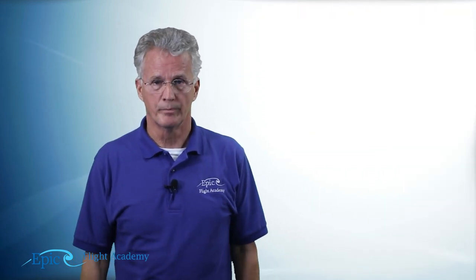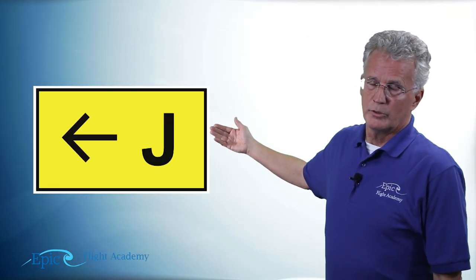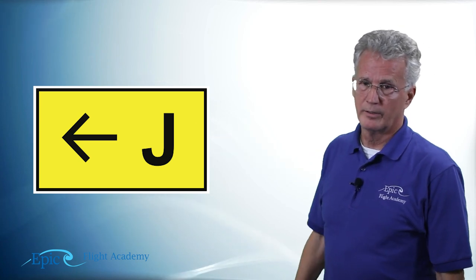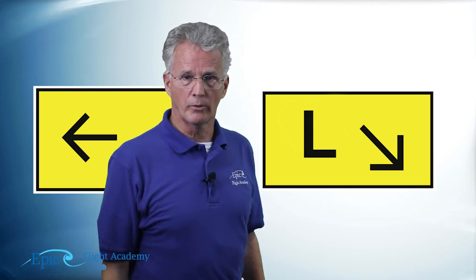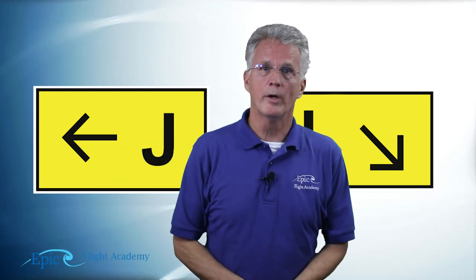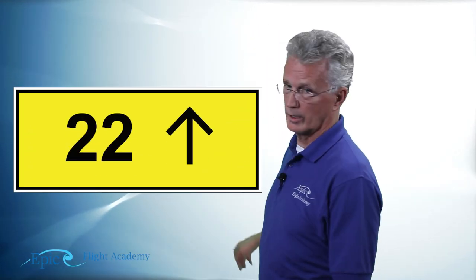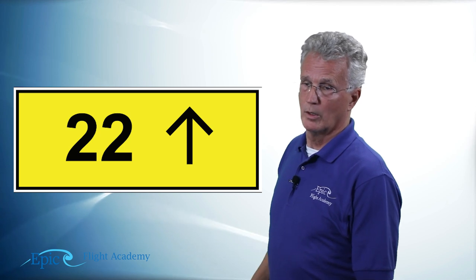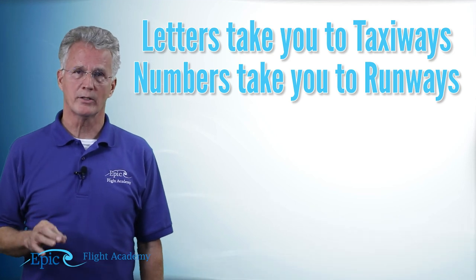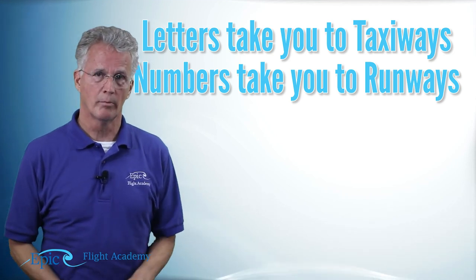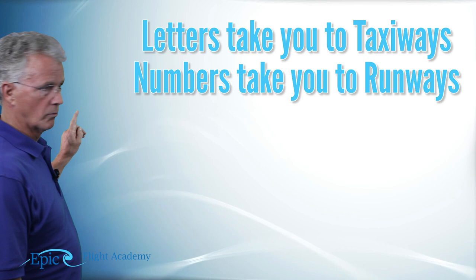Take a look at this one. Letters. J for Julia, to my left. L for Lima, down and to the right. These are directional signs pointing me to something. Take a look at this one. 2-2, arrow straight up. That means straight ahead. What are they pointing me to? The letters are pointing me to taxiways. The numbers are pointing me to runways.